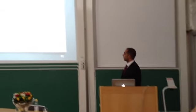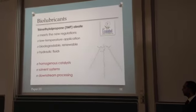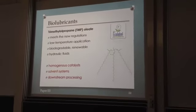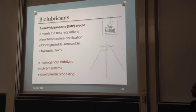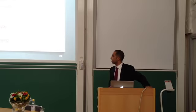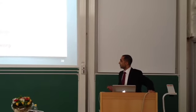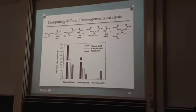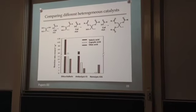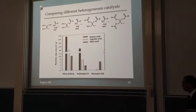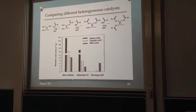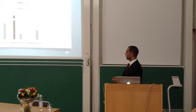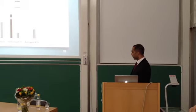The trimethylolpropane ester (TMPO ester) is used as a hydraulic fluid suitable for low-temperature applications. It is biodegradable and renewable and meets new regulations for biolubricants; however, it is currently produced in a solvent system using acidic catalysts which require downstream processing. We compared different catalysts for the production of TMPOEA and observed a trend of decreasing reaction efficiency when increasing the acid chain length using chemical heterogeneous catalysts.